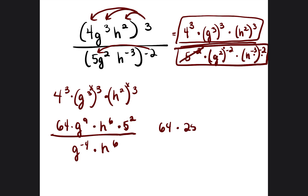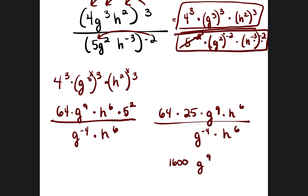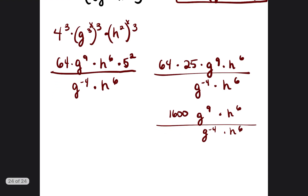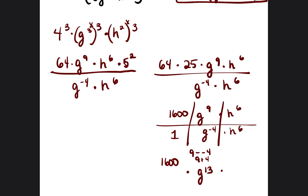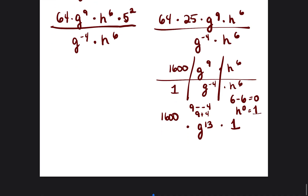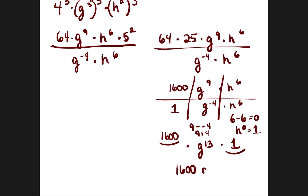So we have 64 times 25 times g to the ninth power times h to the sixth power, all over g to the negative 4th power times h to the sixth power. 64 times 25 gives us 1600. Then g to the ninth divided by g to the negative 4 gives us 9 minus negative 4, which is 9 plus 4, equals 13 — so g to the 13th. h to the sixth divided by h to the sixth gives 6 minus 6 equals 0, and anything to the 0 power is 1. So the final answer is 1600g to the 13th power.